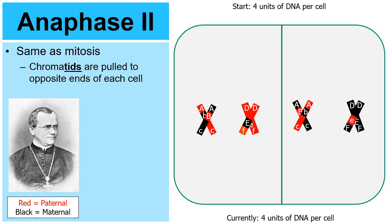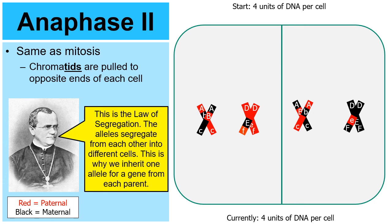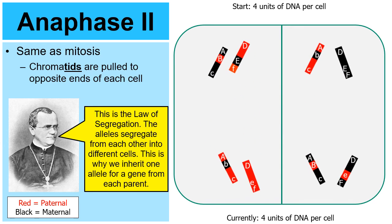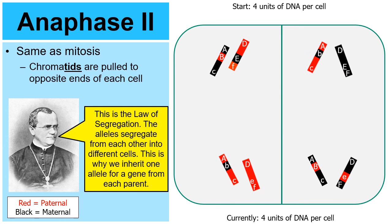This is where we see Mendel's law of segregation. The two A alleles are paired next to each other, as are the two B alleles. The alleles segregate from each other, and eventually the two cells will divide into four. This is why we inherit only one allele for a gene from each parent.